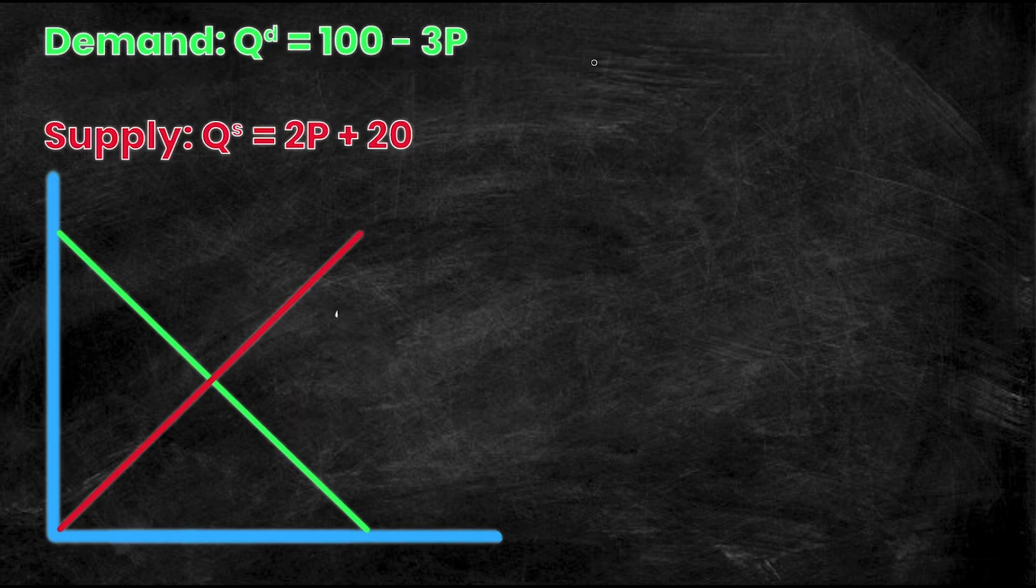All right, so I've isolated the two equations for quantity demanded and quantity supplied and I've written them out here, as well as drawn a very generic supply and demand graph. Now these don't have values on them right now, but obviously we should label our axis. So down here is Q and this axis is P. That's the same for all supply and demand graphs. And this point right here is the point of intersection. So down here, this would be Q star and this right here would be P star.